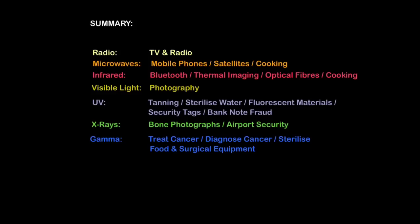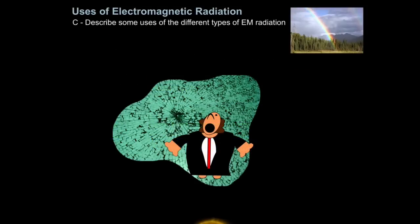But all that is too much to remember, just look at the summary. Radio waves can be used for TV and radio communication. Microwaves for mobile phone communication, satellite communication and cooking through microwave ovens. Infrared can be used for Bluetooth communication, remote controls, thermal imaging, optical fibre communication and cooking through toasters and ovens. Visible light can be used for photography. UV can be used for tanning and tallying salons but you do risk skin cancer at high doses. It can be used to sterilise water, fluorescent materials, used as security tags and used for banknote fraud. X-rays can be used to take pictures of bones and also used in airport security. And finally gamma can be used to treat cancer, diagnose cancer and sterilise food and surgical equipment. And that is how you describe some of the uses of the different types of EM radiation.